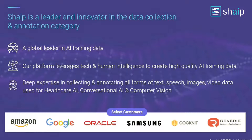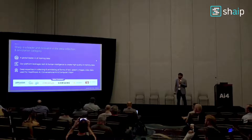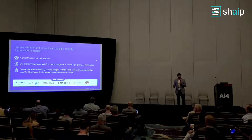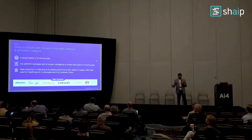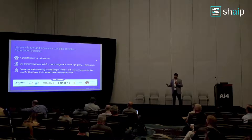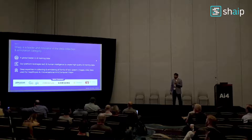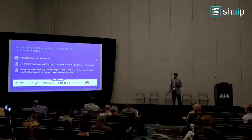Shape is a leader in the data collection and annotation category. We are a global leader in AI training datasets. Our platform leverages technology and human intelligence — human-in-the-loop — to create high-quality AI training data. We work with Fortune 500 companies like Amazon and Google, as well as younger startups, helping them build their AI models by providing curated, diverse, and accurate datasets before the AI training models are built.